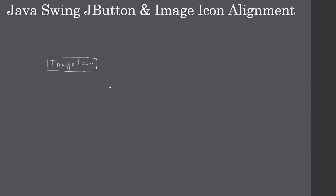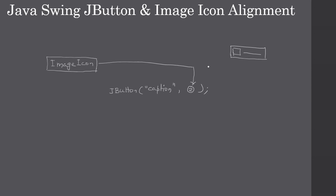First we construct an ImageIcon instance. When creating the JButton, the first parameter is the string caption that will display along with the button, then we pass the ImageIcon as the second parameter. By default, the image icon appears on the left and the caption appears to the right of it, but this can be controlled using the setHorizontalTextPosition method.